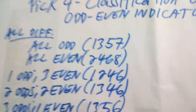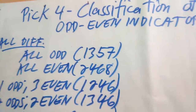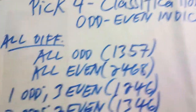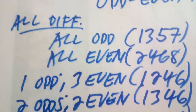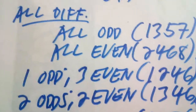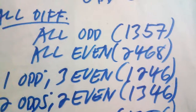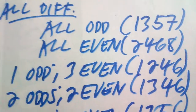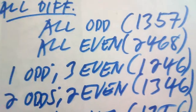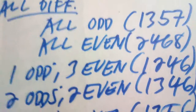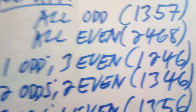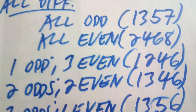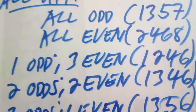We're going to start our discussion with the classification of number combinations for the odd-even indicator. Now, the numbers inside the parentheses are just examples — not necessarily the only numbers — okay? They are just examples of the classification of number combinations.